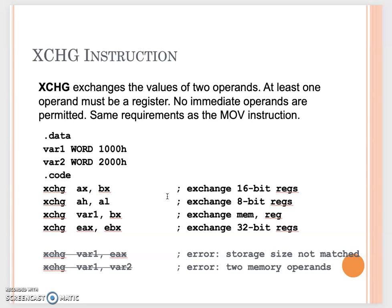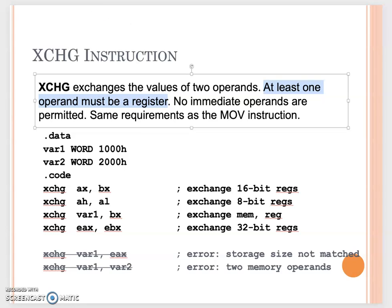The last instruction in this video is XCHG — exchange. XCHG exchanges the values of two operands. At least one operand must be a register, just like MOV — you cannot have two memory operands. Also, no immediate operands are permitted, because both operands need a memory location to store their value.